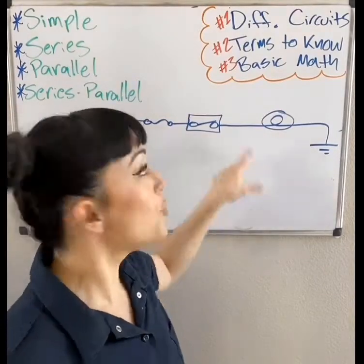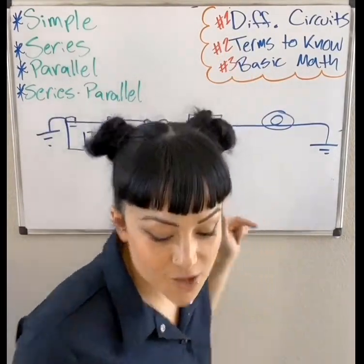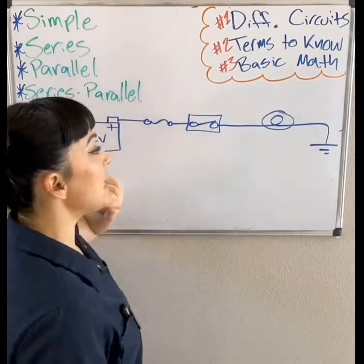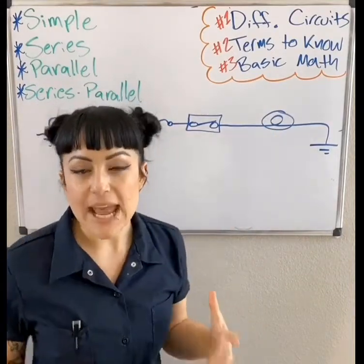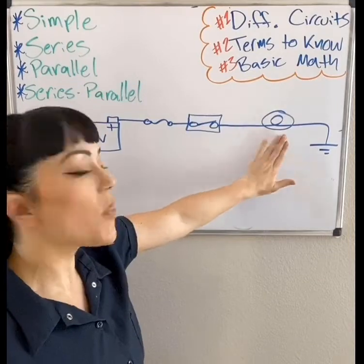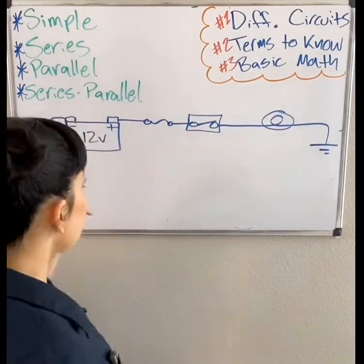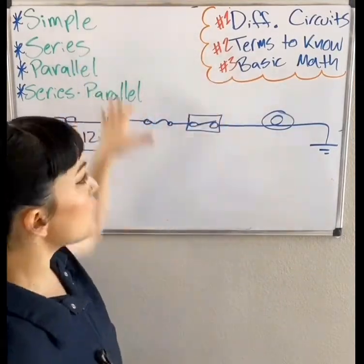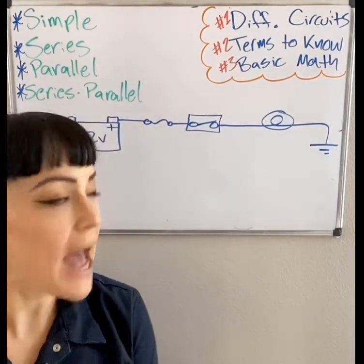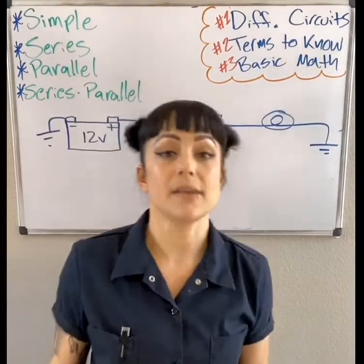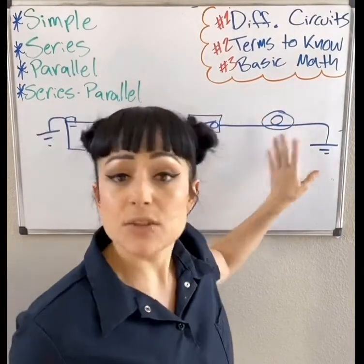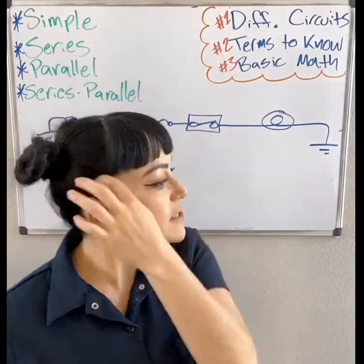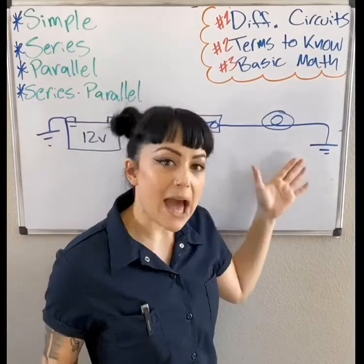First let's get into the different types of circuits. The one I have drawn here, which I've had drawn in the past couple of videos, is what we call a simple circuit. A simple circuit is a circuit that has one thing to do — one load. It could be a light bulb, a motor, a resistor, or a horn. It doesn't matter — it's just a load doing something.